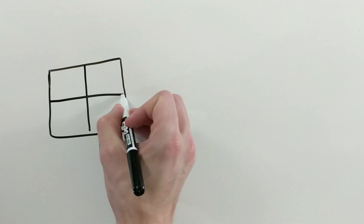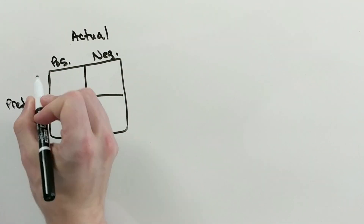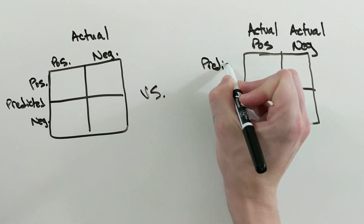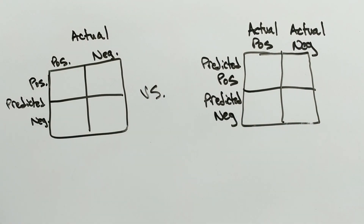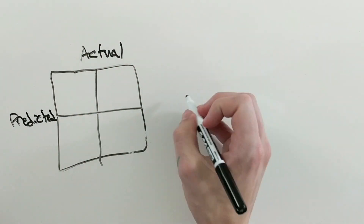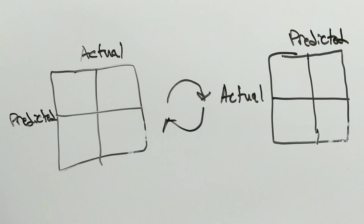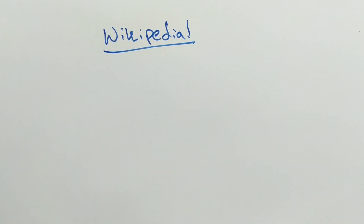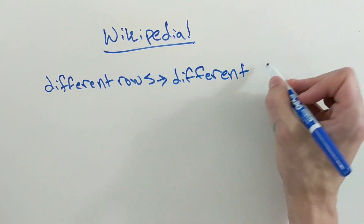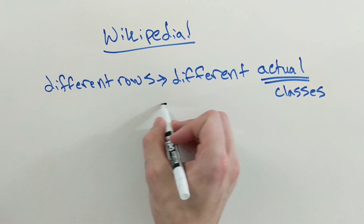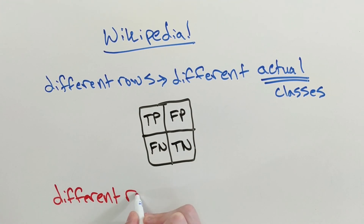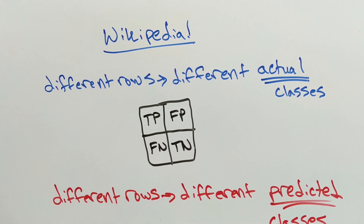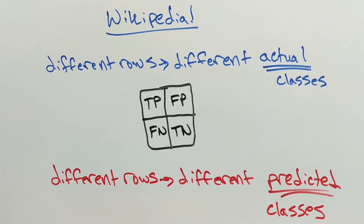Confusion matrices can be confusing to read for two reasons. One, a lot of tables will just label the axes as 'actual' and 'predicted' instead of labeling the values. While identical in function, I find that the prior takes up less space, but the latter is way easier to read. The second reason is that people will sometimes flip the axes — the x-axis becomes predicted instead of actual, and the y-axis becomes actual instead of predicted. Even on Wikipedia, all of the examples have rows representing different actual classes, but the table that defines true positive, false positive, etc., uses rows to represent different predicted classes instead. So you just have to be careful and watch your axes when reading someone's results.